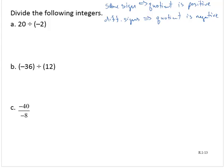20 divided by negative 2. Since these have different signs, this would be negative. And we just think, what's 20 divided by 2? 20 divided by 2 is 10, so therefore, negative 10.